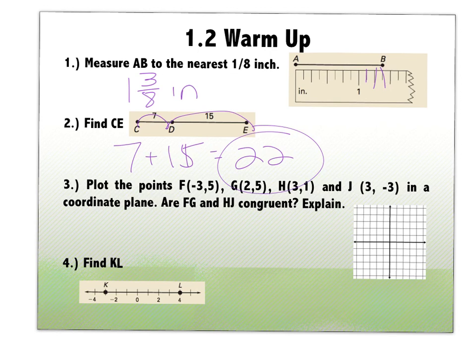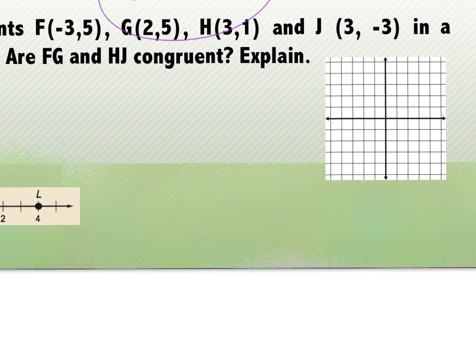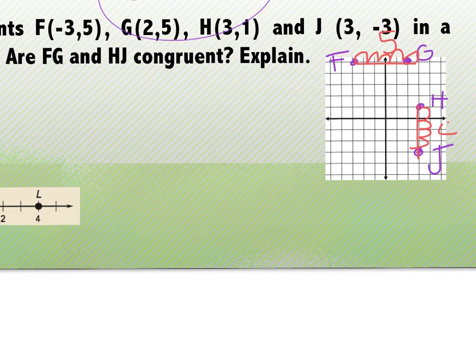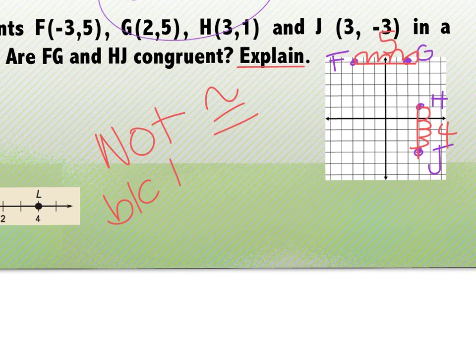Number three says plot the points F, G, H, and J. So I'm going to use my coordinate plane over here. F is negative three, five. Go back three, up five. G is two, five. H is three, one. And J is three, negative three. And then it says determine if FG and HJ are congruent. If I count one, two, three, four, five, this one's five. One, two, three, four, this one's four. So they are not congruent.